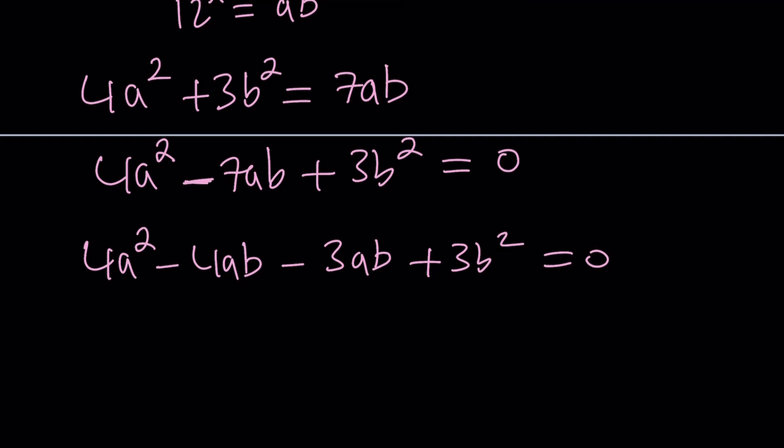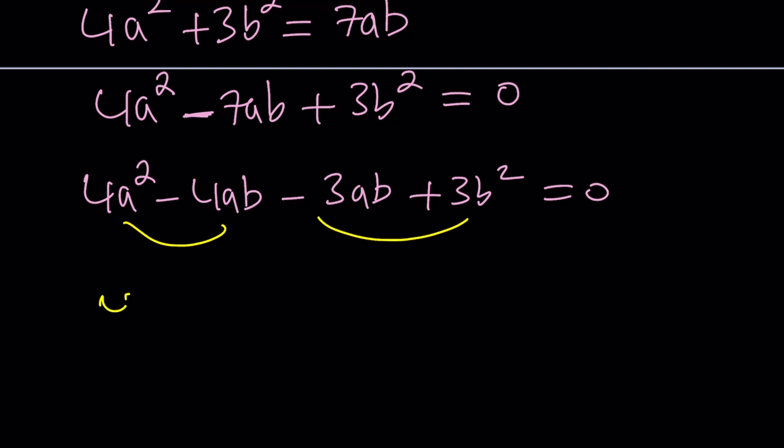Okay? Now we're going to make two groups. First group, these two, and then those two. Second group. Take out 4a. You get a minus b. And then minus 3b, we get a minus b again.